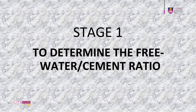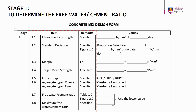Concrete Mix Design, Stage 1: to determine the free water to cement ratio. Stage 1 involves the specification of characteristic strength, determination of the standard deviation, calculation of the margin and target mean strength, specification of cement type, type of coarse and fine aggregates, determination of free water to cement ratio, and specification of maximum free water to cement ratio if any.